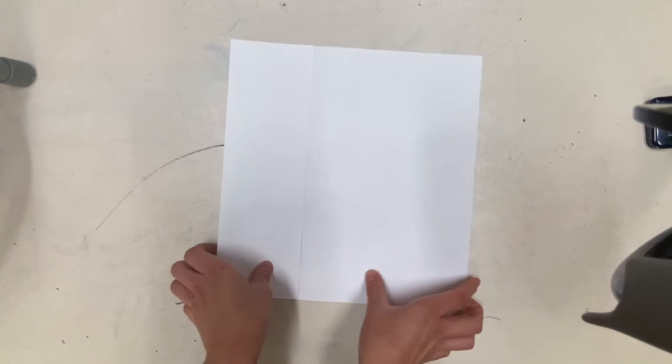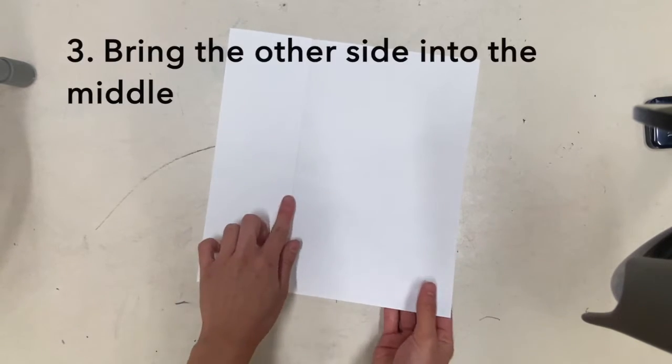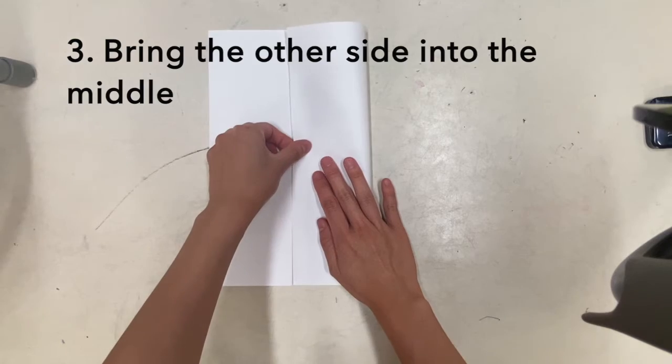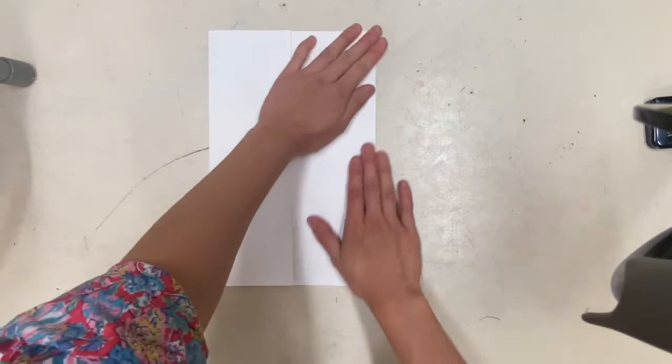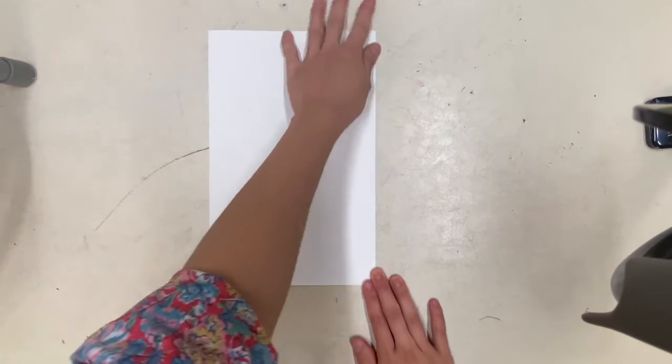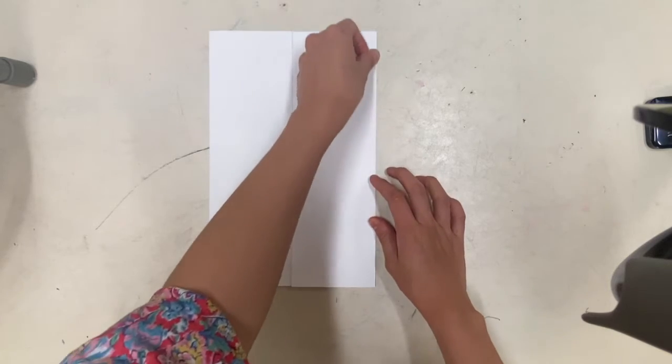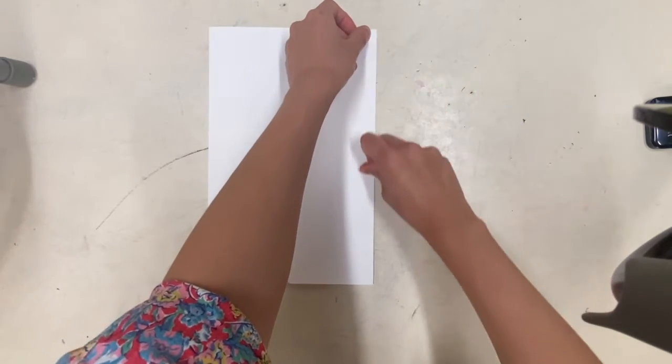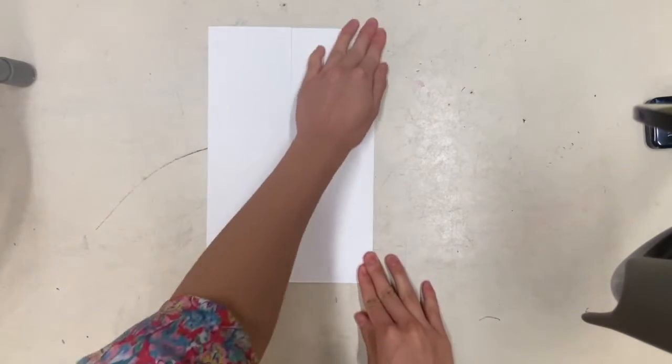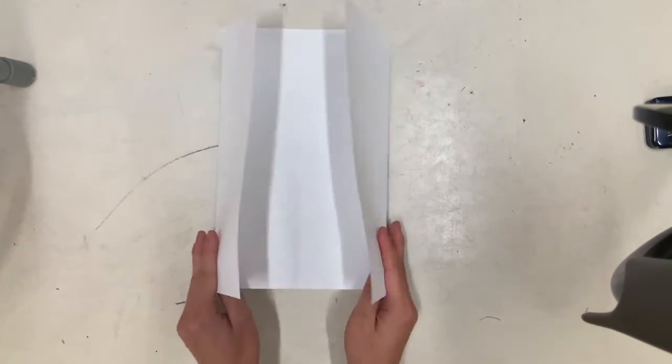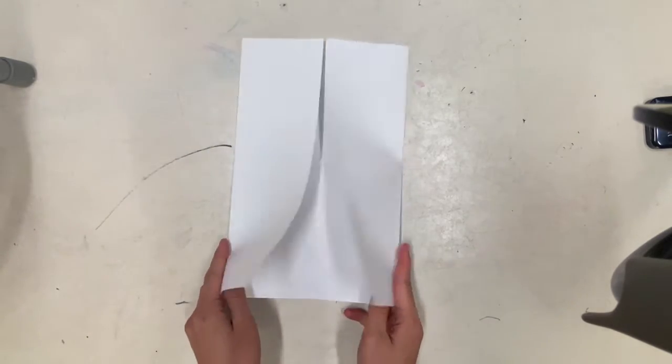I'm going to do the same thing to the other side, bring it into the middle, using my nail to flatten that fold nice and crisp so that I'm left with a double door. It kind of looks like closet doors.